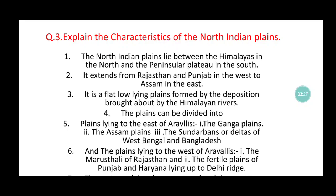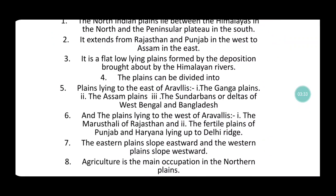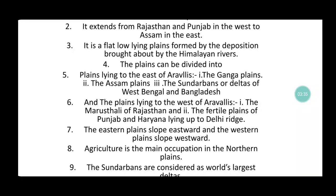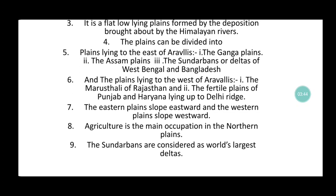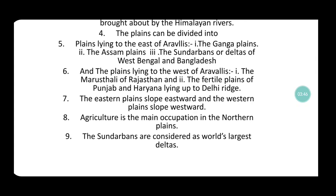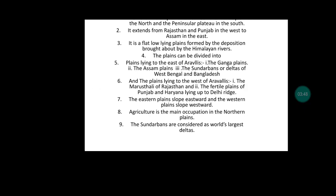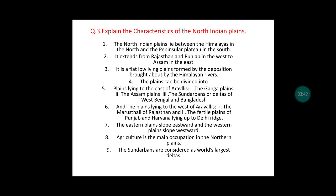The plains lying to the west of the Aravallis can be divided into the Marusthali of Rajasthan and the fertile plains of Punjab and Haryana lying up to the Delhi Ridge. The eastern plains slope eastwards and the western plains slope westwards. Agriculture is the main occupation in the Northern Plains, and the Sundarbans are considered the world's largest delta.